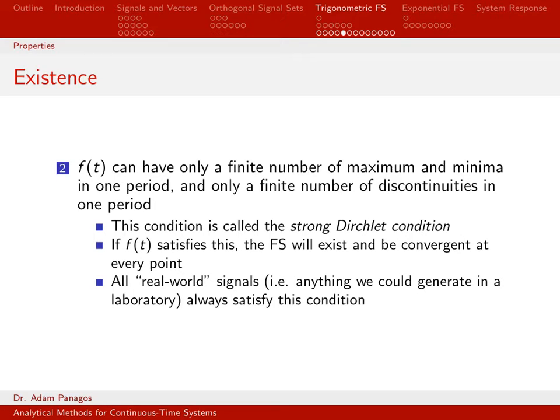Mathematically, you can construct kind of weird signals that end up having an infinite number of discontinuities or an infinite number of maxes and mins in some time period. But we tend to not work with those in this class. Signals that satisfy this, we say satisfy the strong Dirichlet condition. And if this is true, then the Fourier series exists and is convergent at every single point. So most of the things we encounter will encounter this and hence have this stronger convergence property.